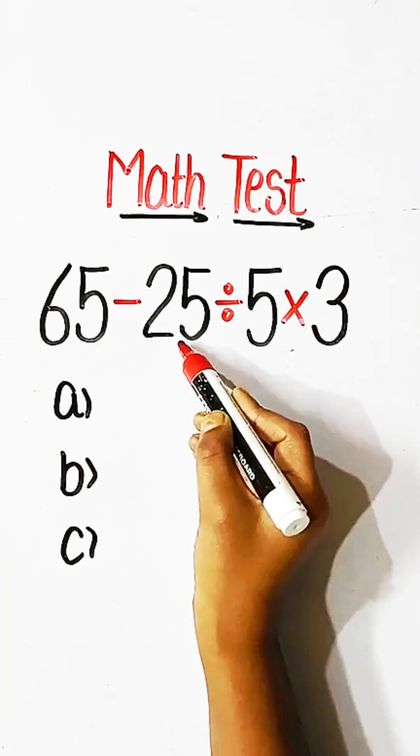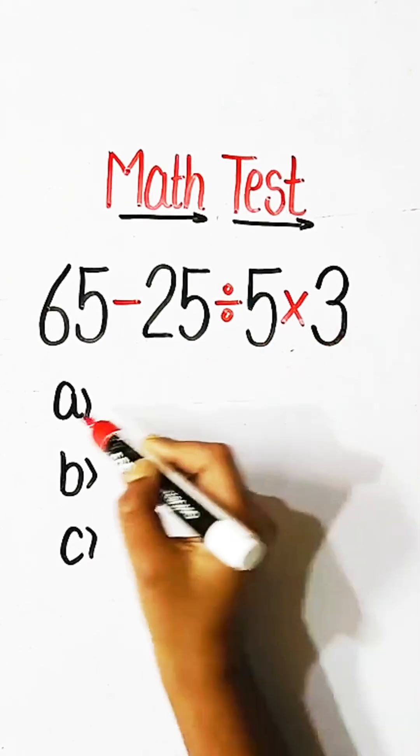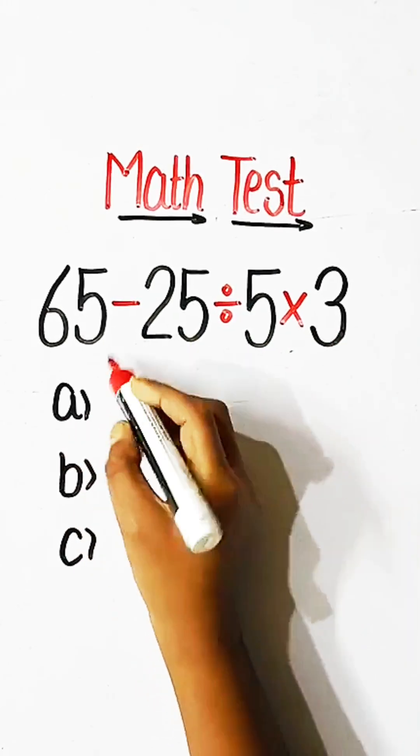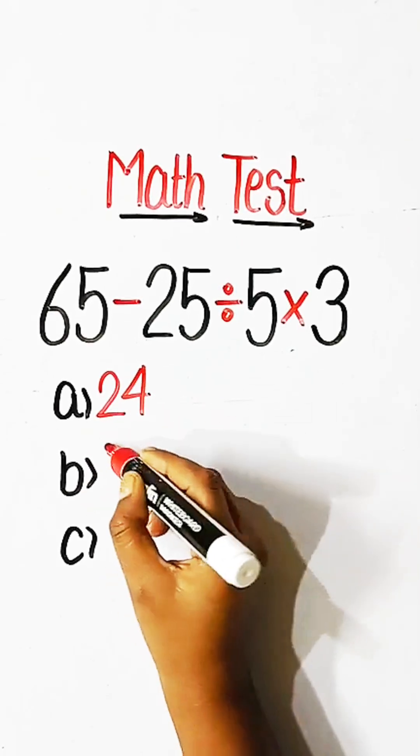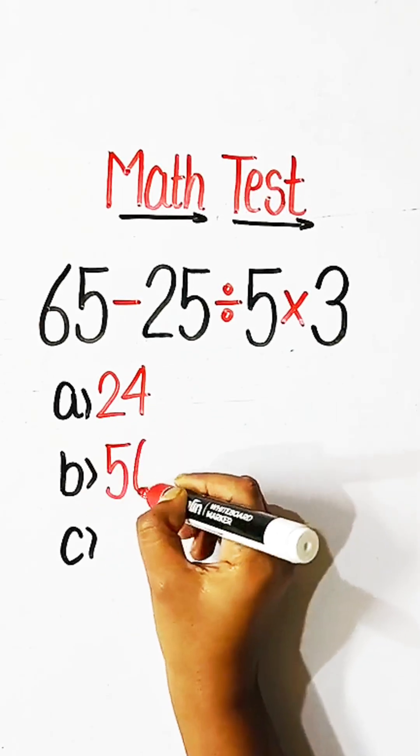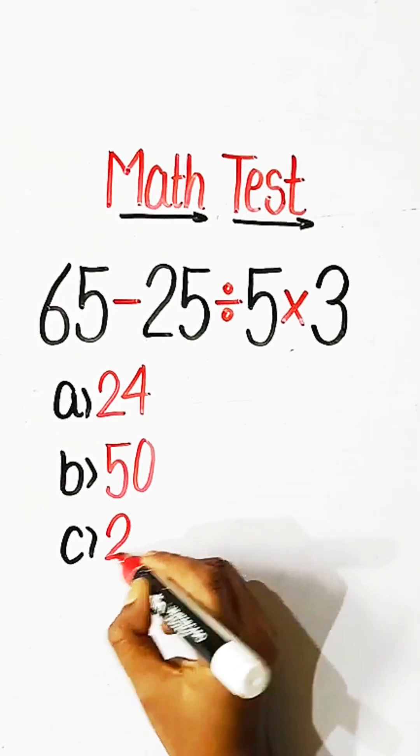65 minus 25 divided by 5 multiplied by 3 equals to what? Option A, 24. Option B, 50. Or option C, 20.